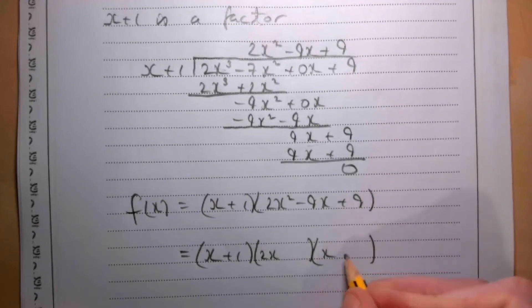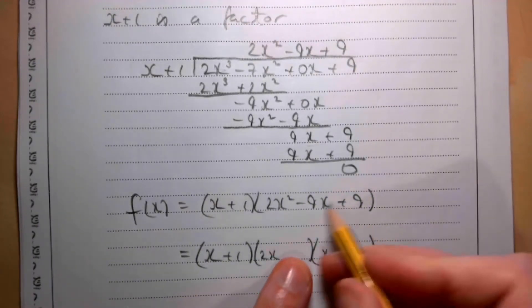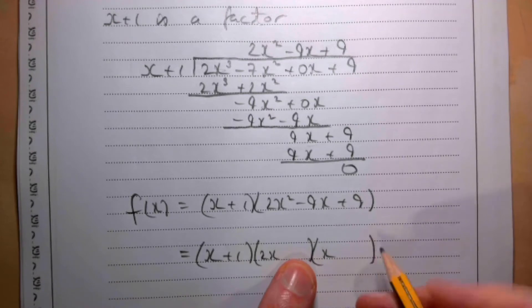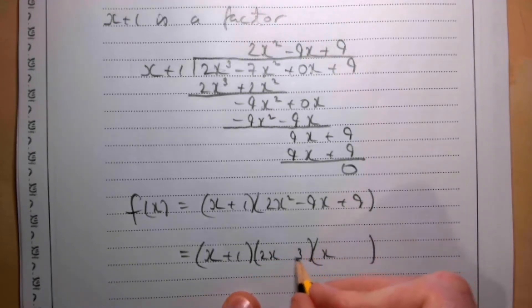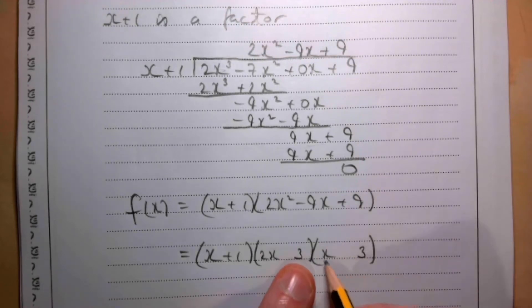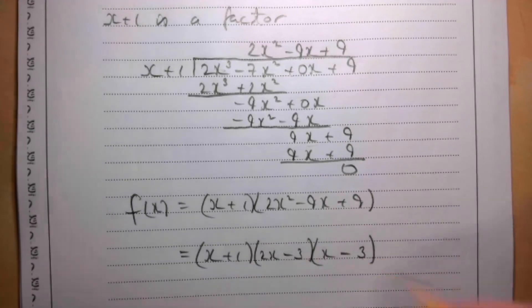But I'm just going to try and split it up into two factors. So it's going to be 2x and x, and then I'm trying to make 9 with these two terms. If I go 3 and 6, and we want a minus, so if I make both of those minus, then that's what we're looking for.